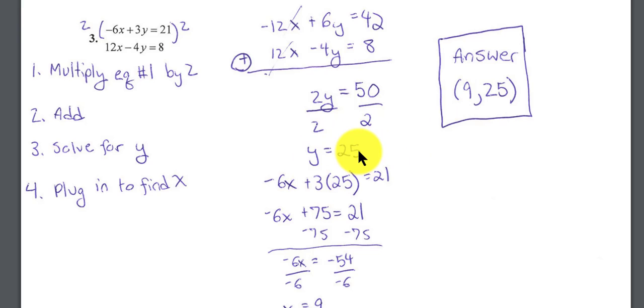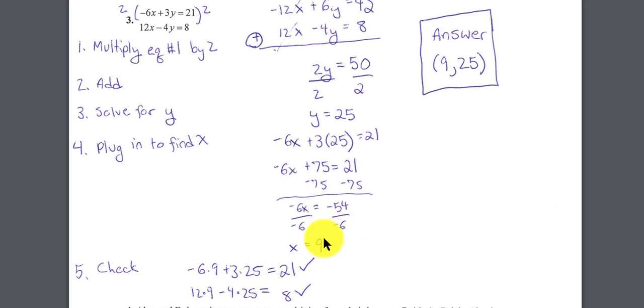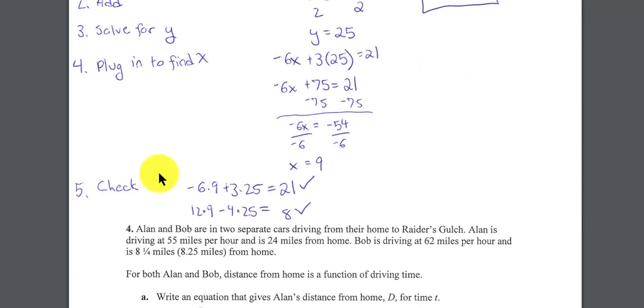When we clean up the algebra here, you end up with y equals 25. So if I know y equals 25, I can replace either of these y's with 25. And when you do that, you end up with x equals 9. So the answer is 9 comma 25, and then the check is down here. On my test, I'm not going to require you to show the check. If you have extra time, wonderful. You can show me the check.